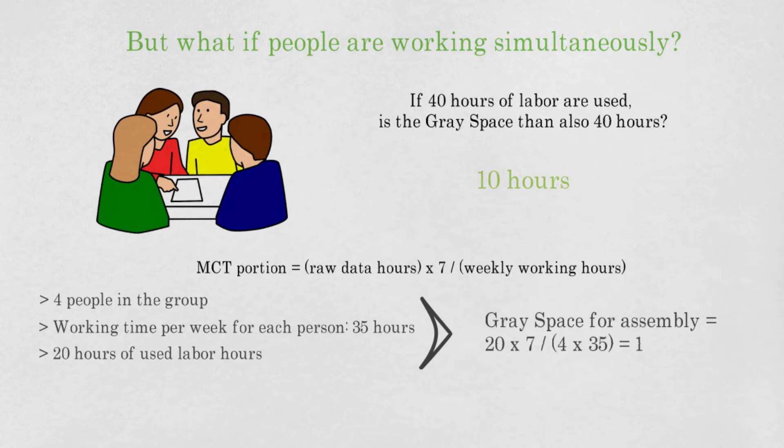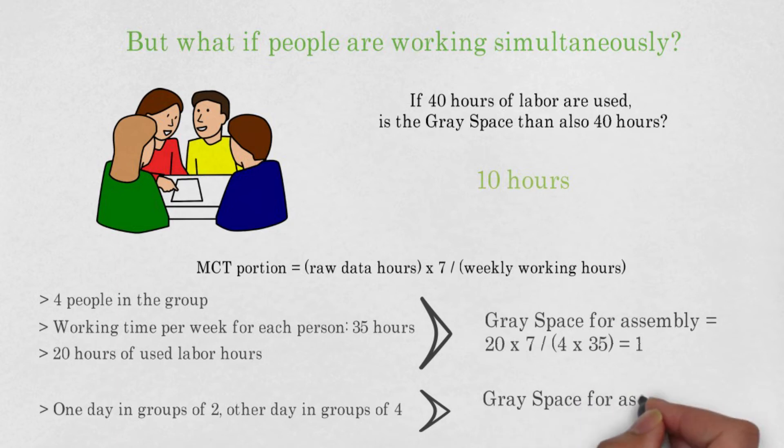However, what if we make it a bit more complicated and say that people worked one day in groups of 2 and the other day in groups of 4? You should remember now that you keep the calculations simple. An average would therefore be enough. This means you change 4 into 3 persons. Then the gray space for assembly would be 20 times 7 divided by 3 times 35. The result is 1.3 days.